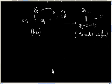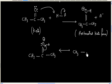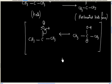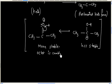The protonated keto form has two possible resonating structures. One resonating structure is less stable because the octet of carbon is not complete. The other resonating structure is more stable because the octet of each atom is complete.